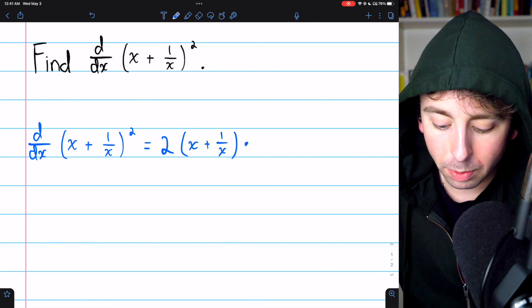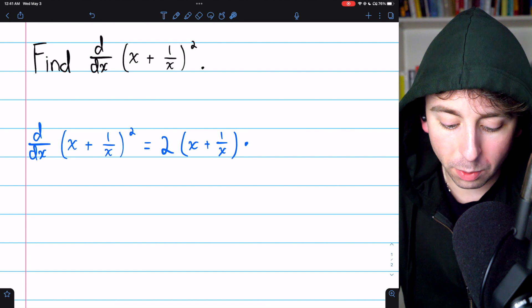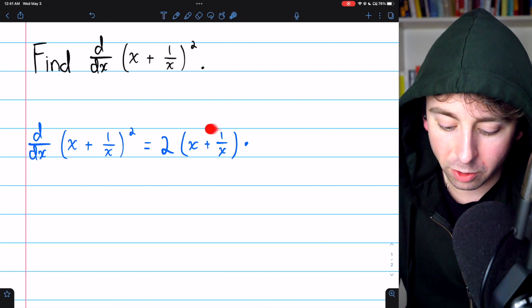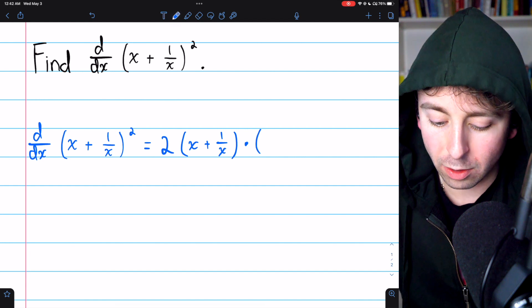Now we need to multiply by the derivative of the inside function. The outside function was a thing squared. The inside function is just x plus one over x. So now we're multiplying by the derivative of that.